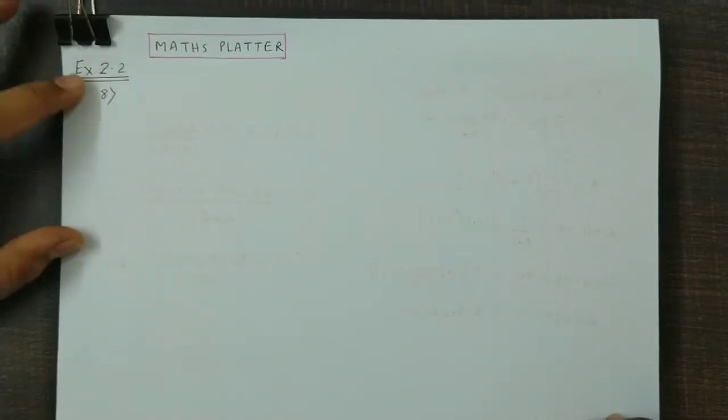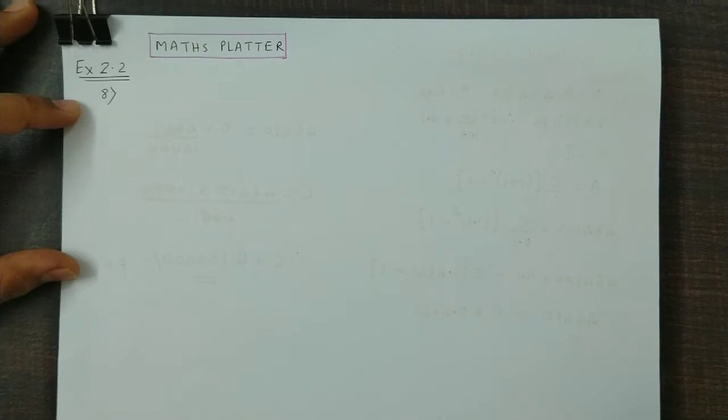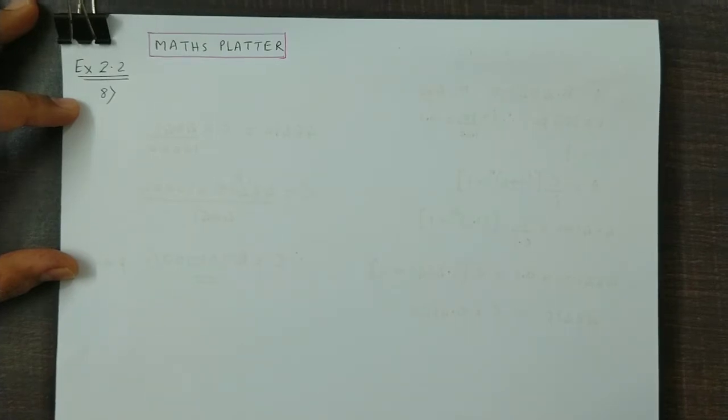Now we discuss question 2.2, question 8. A person wants to create a fund of Rs. 6,96,150 after 4 years at the time of his retirement. He decides to invest a fixed amount at the end of every year in a bank that offers him interest at 10% per annum compounded annually.